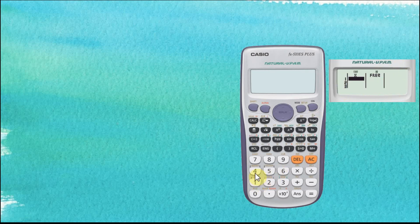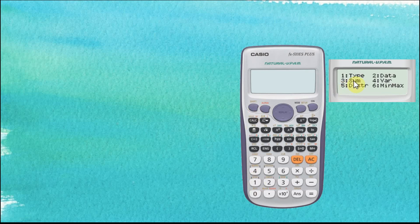To find the areas of the normal distribution curve, we don't need to provide any data. So we just go to All Clear to clear the screen, and then we go to Shift, Statistic. Here we have a few options.